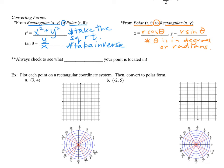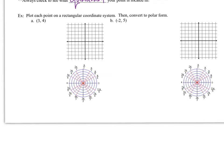So let's try this out. As we do this, you always want to make sure to check what quadrant your coordinate is located in. Here we're asked to plot each point on a rectangular coordinate system, then convert to polar. As we look at this first coordinate (3, 4), if we plot that point, we're in quadrant 1. There's point (3, 4).